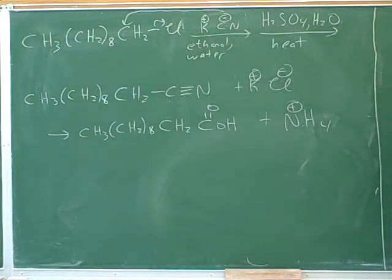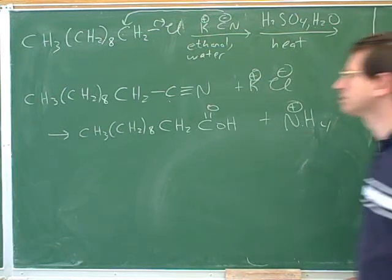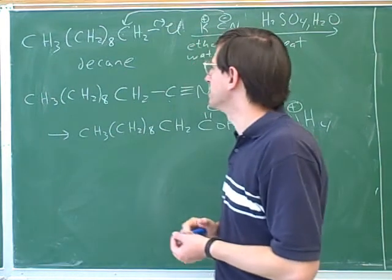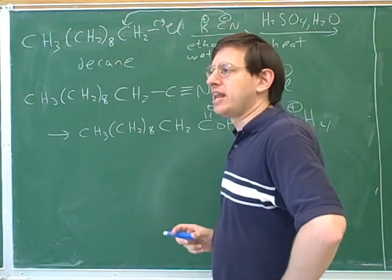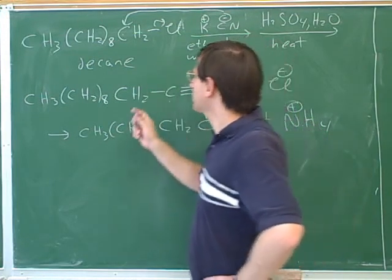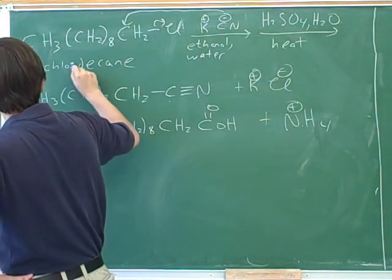Okay. Let's give a name to this compound. Decane chloride? Is that what it is? It is decane, because there's ten carbons. Now, this is a alkyl halide. Now, it turns out that halides are not named with suffixes. They're named with prefixes. So instead of calling this chloride, we should call it chloro. Chlorodecane, yes.